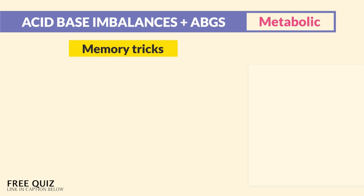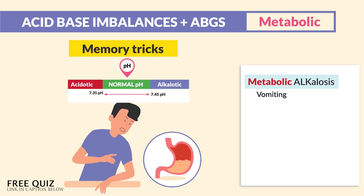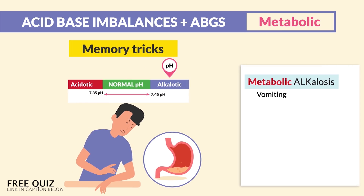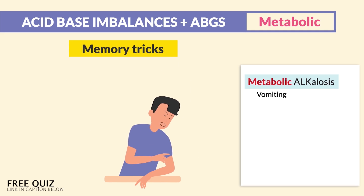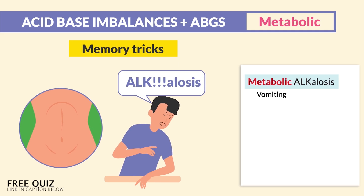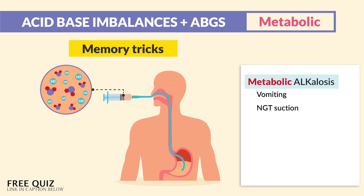Now our memory tricks are really fun here. With metabolic alkalosis, we vomit out all that acid, leaving us in a base or alkalotic state. Just think: alkalosis kind of sounds like you're throwing up — and you hold your stomach region, indicating that metabolic area. This is also true with NG tube suctioning: that nasogastric tube causes too much acid loss, leaving us in a base or alkalotic state.